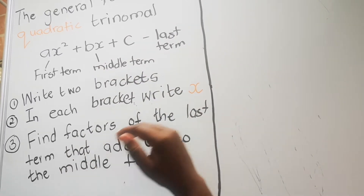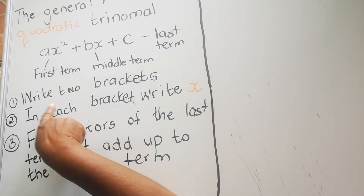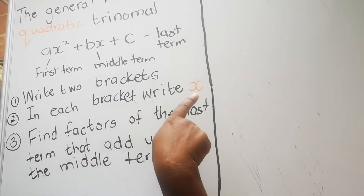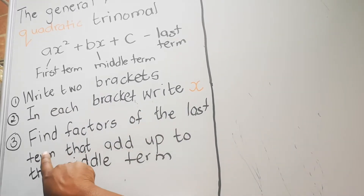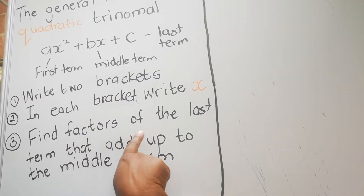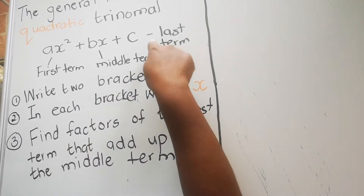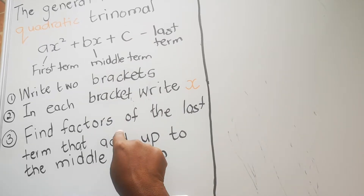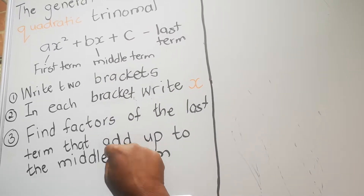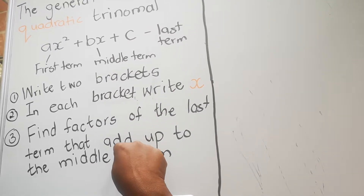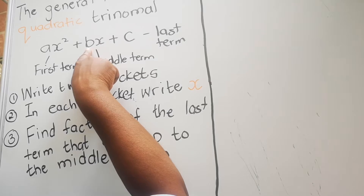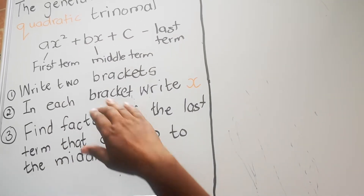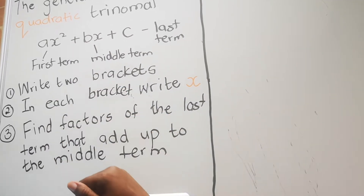When you are factorizing, there are three steps to follow. The first step: write two brackets, and in each bracket write an x. Then find the factors of the last term — the factors that when you add them up give you the middle term. Let's look at an example and see how we follow these three steps.